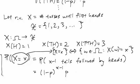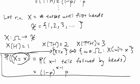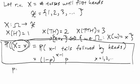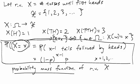So this here, again, this is defined for x equals 1, 2, and so forth. This here is called the probability mass function of random variable X. In particular, this is a probability mass function of a geometric random variable with parameter P.